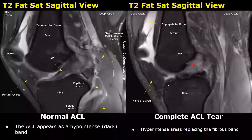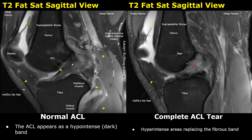These are T2 fat-saturated images showing the normal and abnormal ACL. We can see the normal fibrous hyperintense band — this is the ACL. Whereas in case of a complete ACL tear, we do not see the band — we just see hyperintense areas indicating a complete ACL tear.